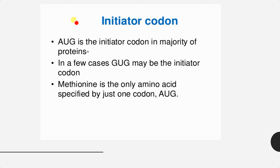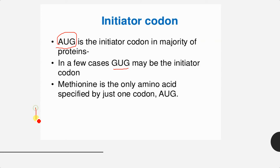Just like termination codons, there are initiator codons to start translation. AUG acts as the initiator codon for the majority of proteins, but in a few cases GUG may also act as an initiator codon. Once protein synthesis is started, if AUG appears again in the middle of the sequence, it codes for methionine rather than reinitiation.